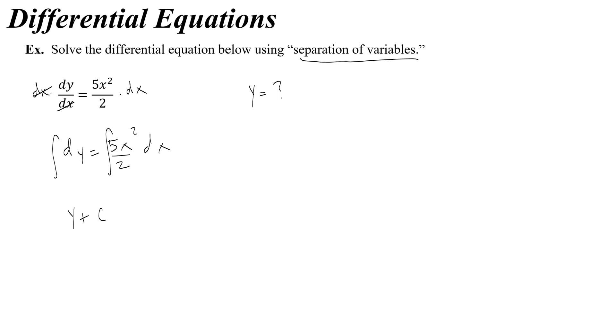And then on the right you would get 5 over 2, you'd raise x to the power of 3, so it really is 5 over 6, plus we'll call that d.